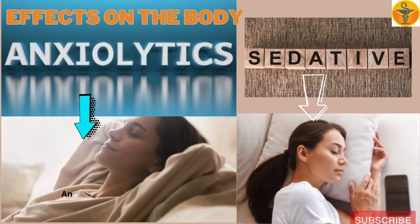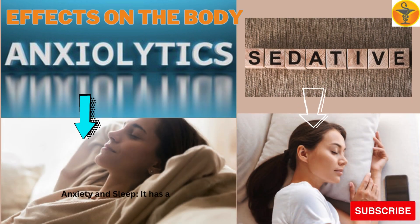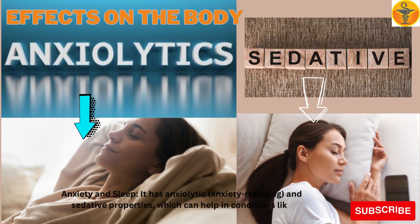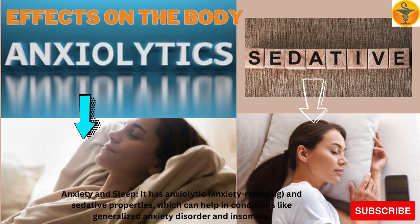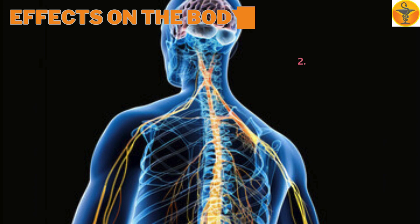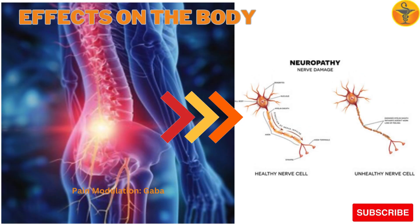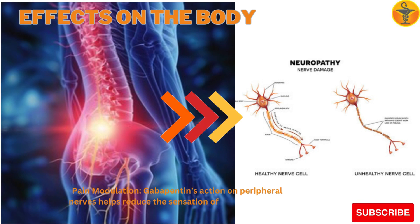Anxiety and Sleep: Gabapentin has anxiolytic (anxiety-reducing) and sedative properties, which can help in conditions like generalized anxiety disorder and insomnia. Peripheral Nervous System — Pain Modulation: Gabapentin's action on peripheral nerves helps reduce the sensation of pain from nerve damage.